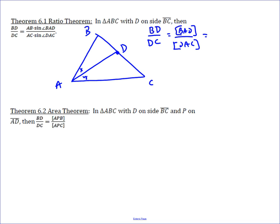So the area of BAD is simply going to be one-half AB times AD times the sine, and actually we'll just write it as angle BAD, over the area of DAC,